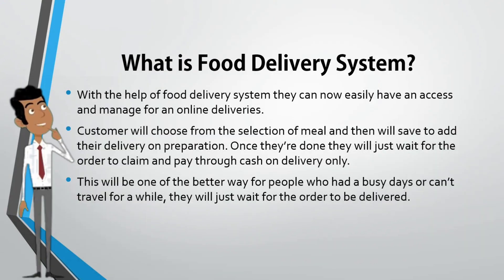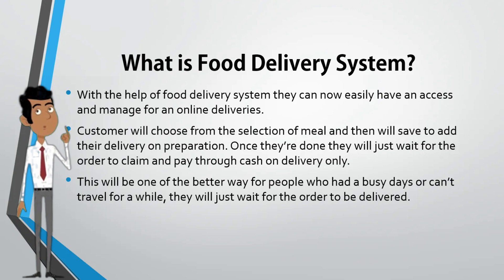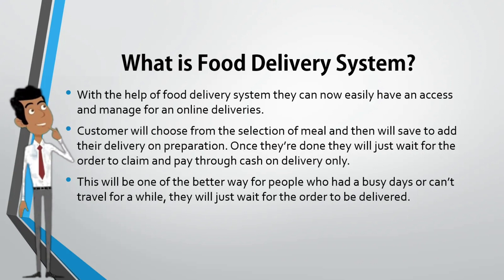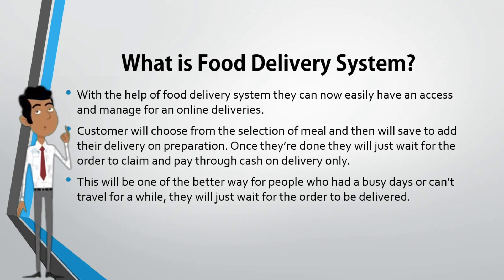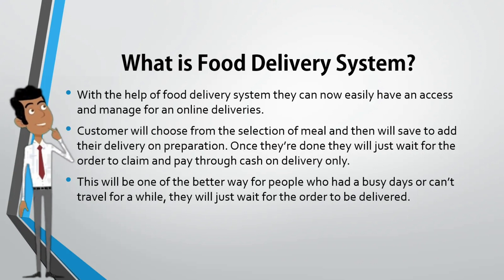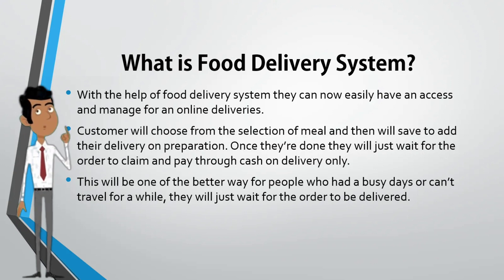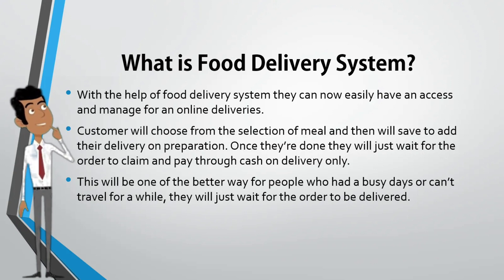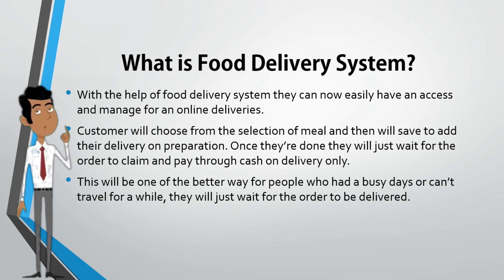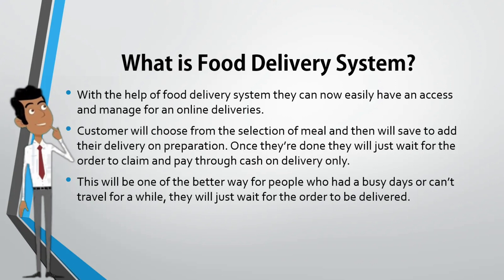What is a food delivery system? With the help of a food delivery system, they can now easily have access and manage online deliveries. A customer will choose from the selection of items and then save to start their delivery or preparation. Once they are done, they will just wait for the order and pay through cash on delivery.